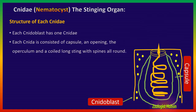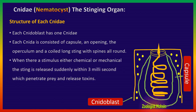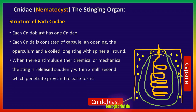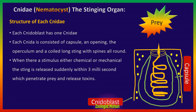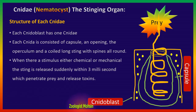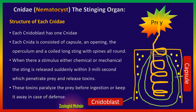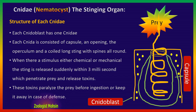Now what happens? When there is a stimulus — either chemical or mechanical — outside, the sting is released suddenly within three milliseconds, which penetrates the prey and releases toxins. That is the mechanism to attack prey. These toxins paralyze the prey before ingestion, or keep it away in the case of defense. So Cnidae act as both an organ of offense as well as defense.